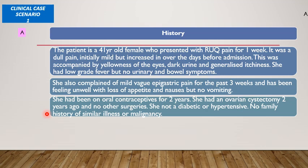She had been on oral contraceptives for the last two years. She had an ovarian cystectomy done two years ago and no other surgeries. She is not diabetic or hypertensive, and there is no family history of similar illness or malignancy.